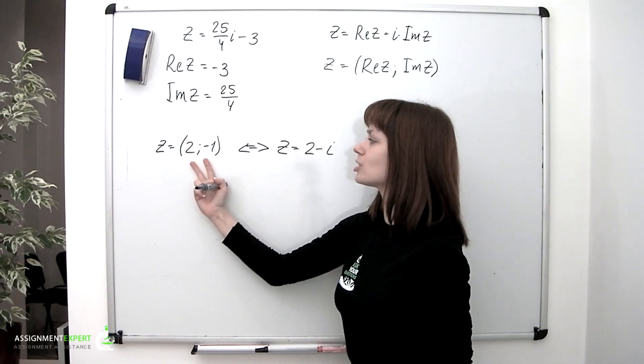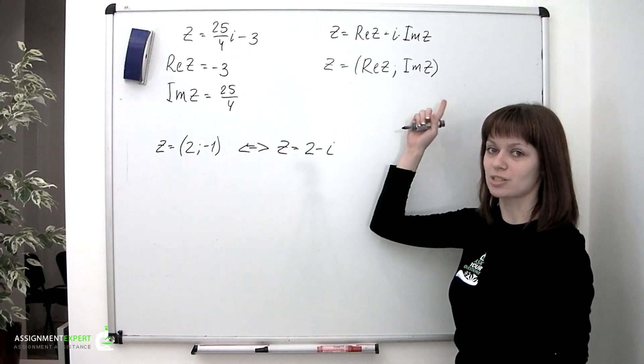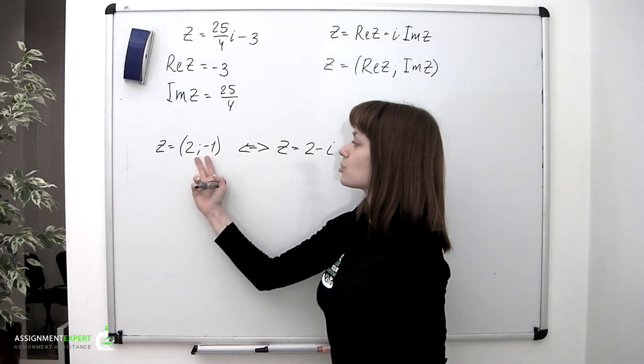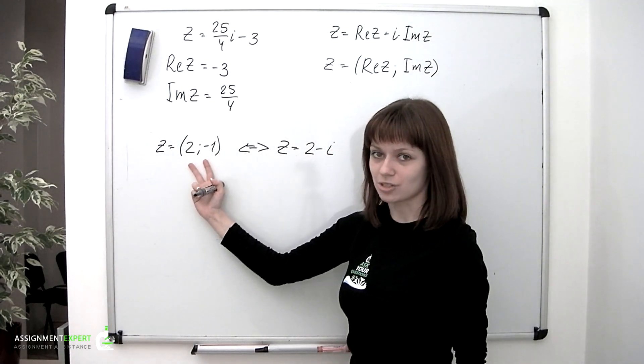Remember that the order of numbers within the pair must be fixed. Otherwise, how can we tell which of two numbers stands for the real part and which is imaginary? So the numbers within the pair cannot be switched without consequences.